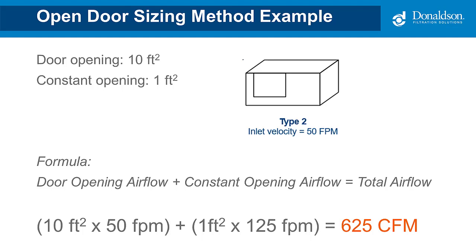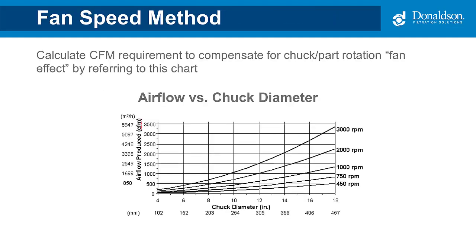When would you use this over the enclosed method? Typically you'll use this method if you have really fast cycle times and you're opening those doors immediately to change out parts — that's when you're most likely to use this method, to protect employees from getting blasted by mist when they open the door. The next method is the fan speed method, typically used where you do not have an enclosure and need to strategically place a hood to capture the mist — a common example is wet grinding. Using this chart, you take the diameter of the wheel and compare it to the speed to get the recommended airflow. Most wet machining applications without enclosures do not operate above 3,500 RPM.